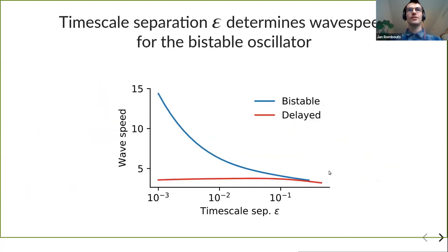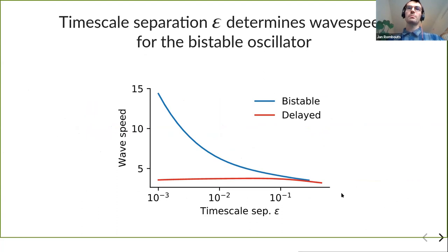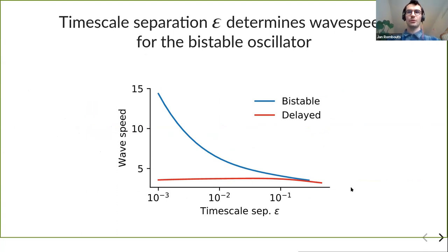Here we have the wave speed as a function of epsilon. The red and blue lines have similar waveforms — relaxation on the left, sinusoidal on the right — but the speed dependence on epsilon differs for the two systems. For the bistable system, speed goes down as epsilon goes up, meaning sinusoidal waveforms produce slower waves.